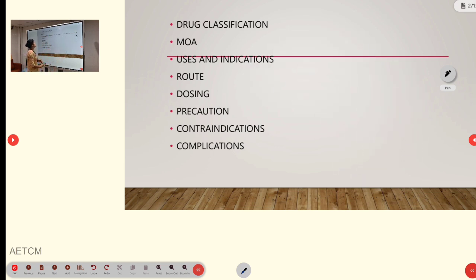The route we usually give is IV and the dosing includes adult dose and pediatric dosing. Adult dose is 0.2 to 0.6 mg per kg.